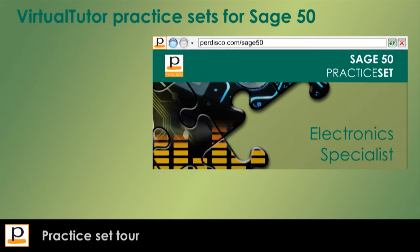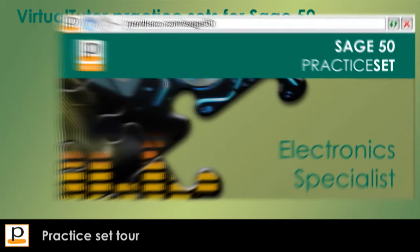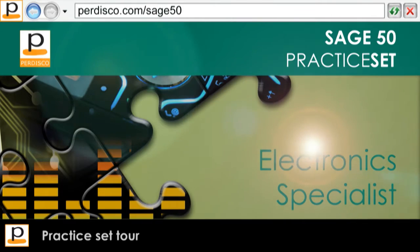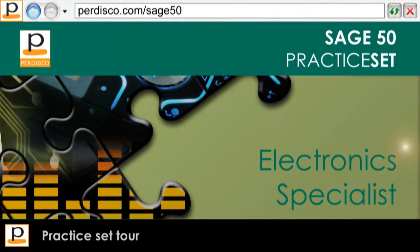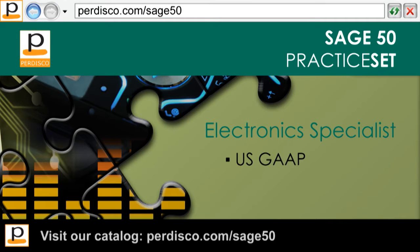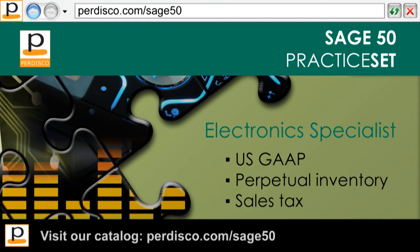All for less than half the price of most other practice sets on the market. I'll take you through each of these features, showing them in the context of our electronic specialist practice set title, which covers the US GAAP accounting standard, perpetual inventory, and sales tax.